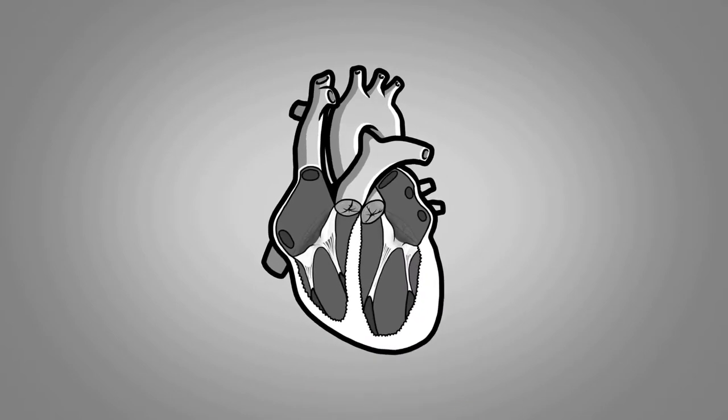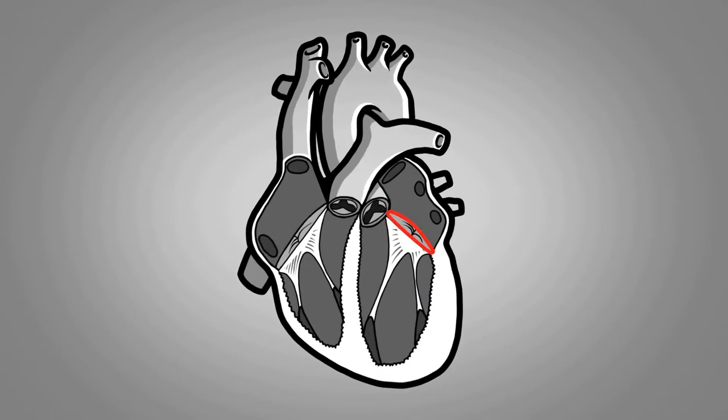The mitral valve is composed of one of the four fibrous rings that make up the cardiac skeleton, as well as two flaps known as leaflets, some tendons known as the corda tendinia, and the papillary muscles, which are anchored to the bottom of the left ventricle. All these structures form the mitral apparatus.